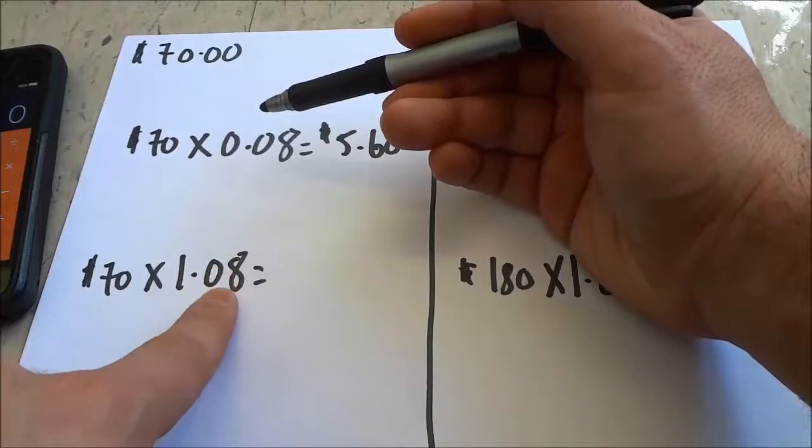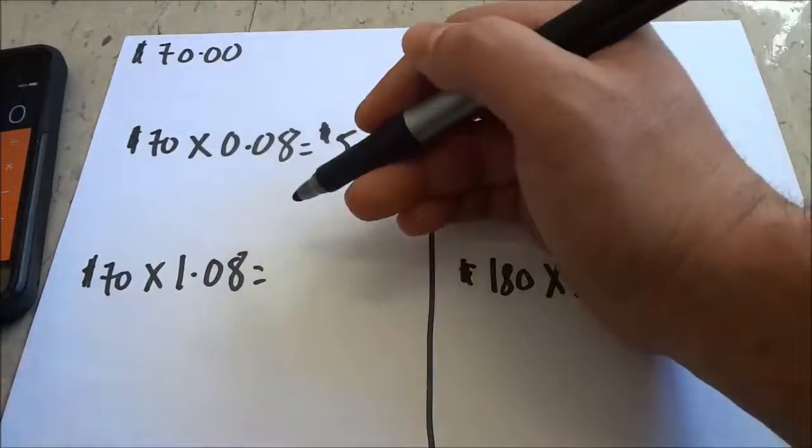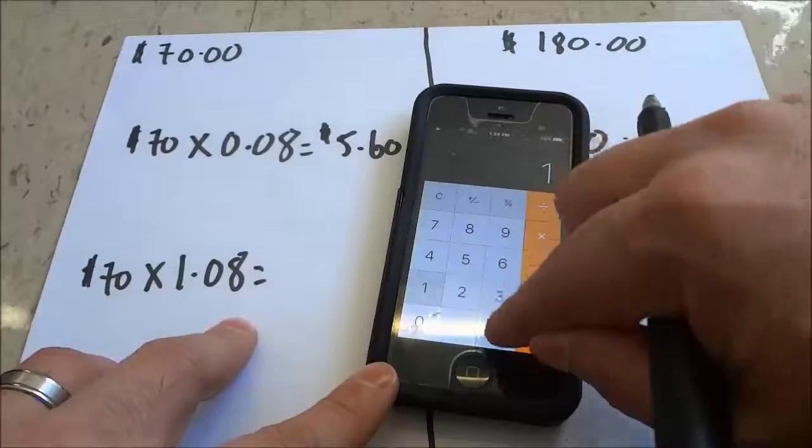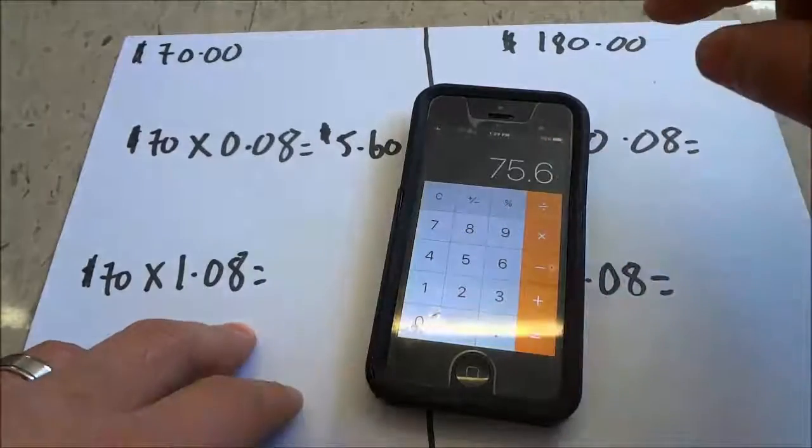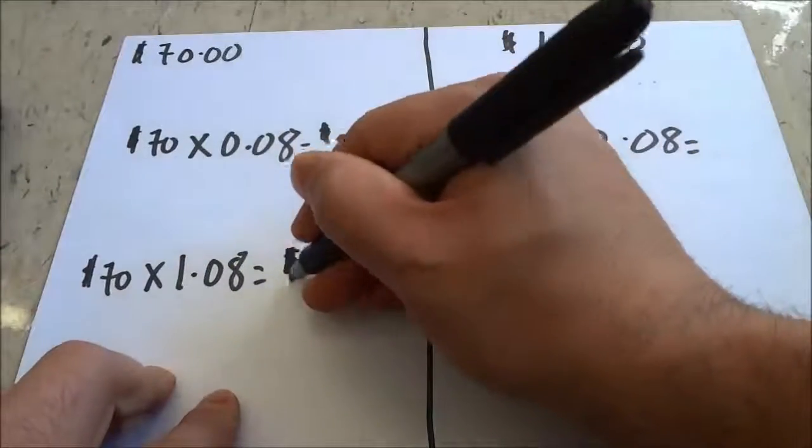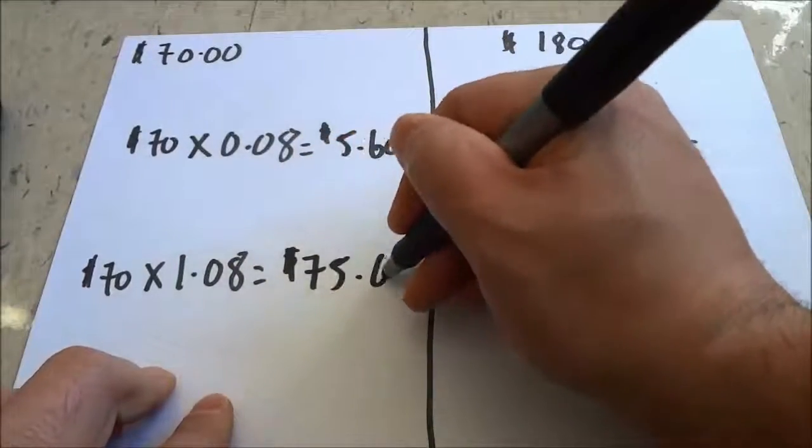So 70 × 1.08 equals $75.60. That is the total cost.